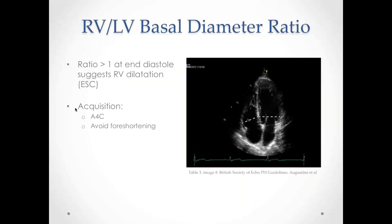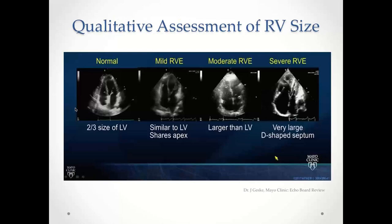The RV-to-LV basal diameter ratio is measured at end diastole — measuring the basal diameter of the RV and LV — and a ratio over 1 suggests RV dilatation. Qualitatively, in a normal apical 4-chamber view the RV is approximately two-thirds the size of the LV. Mild RV enlargement is seen as the septum starts moving toward the apex. Moderate enlargement is when the RV equals the LV size. Severe enlargement shows an extremely large RV with a D-shaped septum.